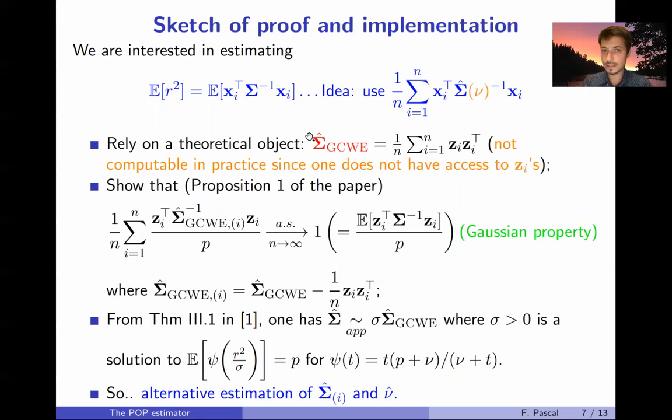So let's first introduce kind of theoretical objects, this sigma GCWE that depends only on the Gaussian part of this T-distributed vector xi. Of course in practice we cannot use this because it cannot be computable, so we use this only for proving our results. We have shown that we have this convergence of this empirical mean toward one, and this one corresponds to this ratio because here we are in a Gaussian context, so this expectation is equal to p.